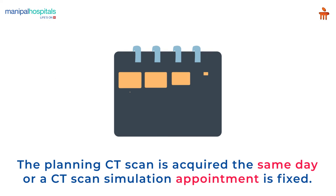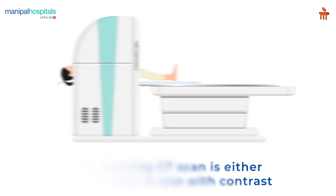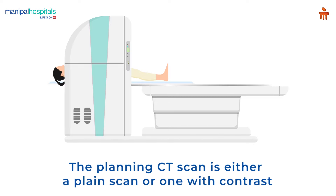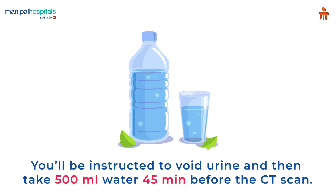The planning CT scan is acquired the same day or a CT scan simulation appointment is fixed. The planning CT scan is either a plain scan or one with contrast depending on the region to be treated. Contrast CT scan requires a 3-hour fast. Your bladder must be full for the scan. You will be instructed to avoid urine and then take 500 ml water 45 minutes before the CT scan.